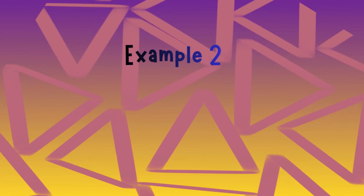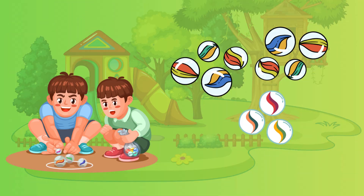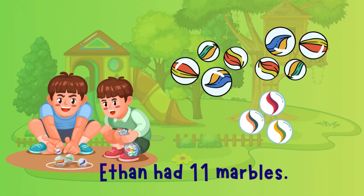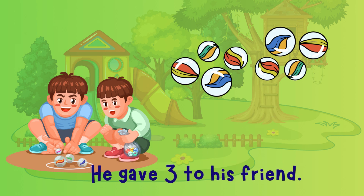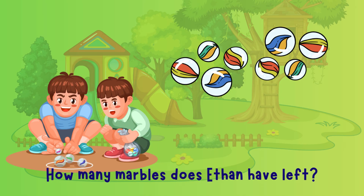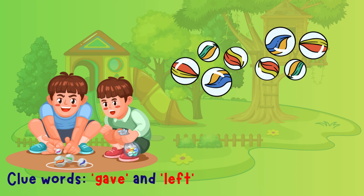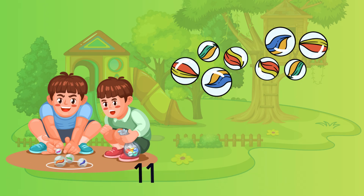Example 2, Subtraction Problem. Ethan had eleven marbles. He gave three to his friend. How many marbles does Ethan have left? Clue words: "gave" and "left" — that's subtraction. Eleven minus three equals eight. Ethan has eight marbles.